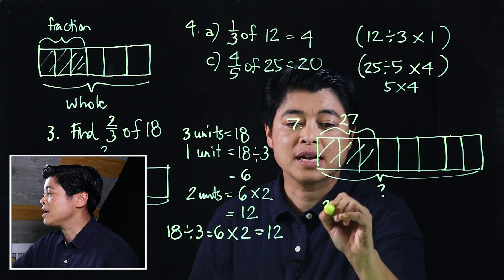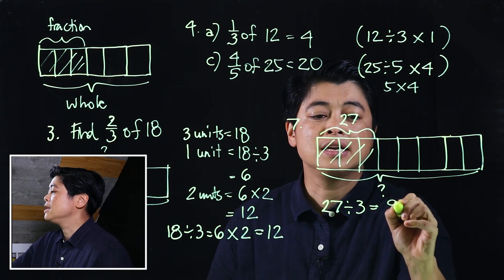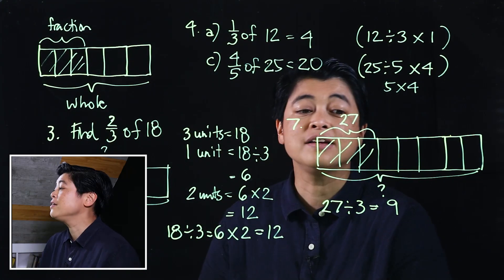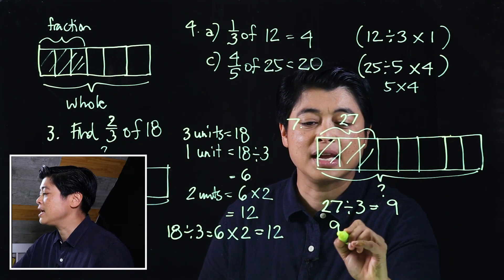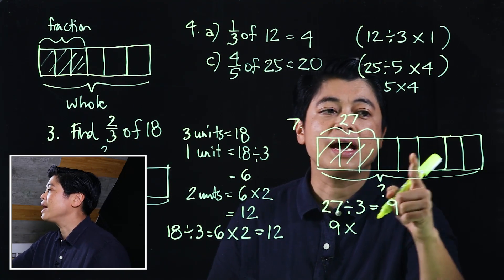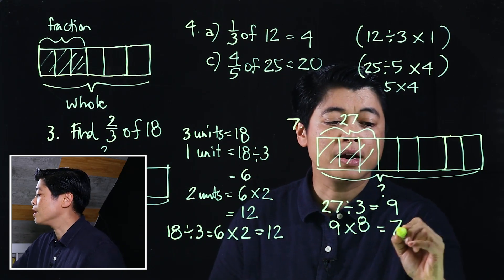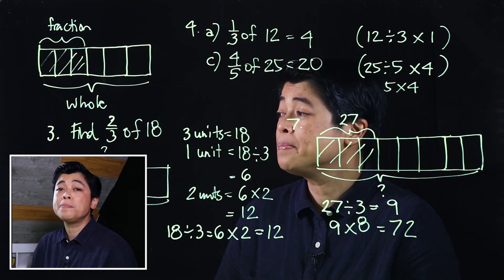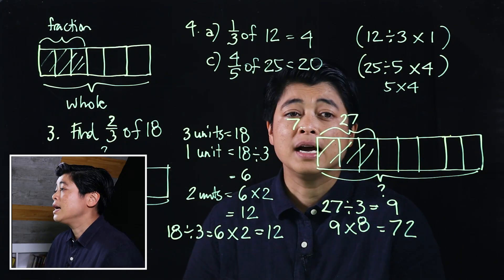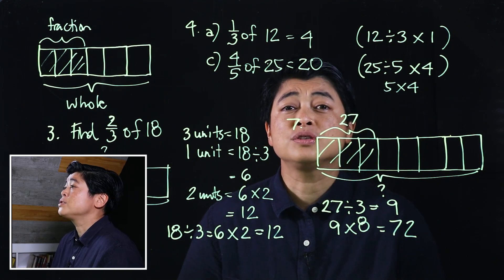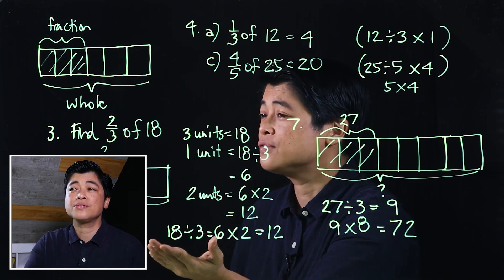Here it's ideal to have the bar model, so I know that 27 is for three groups, which means I'm going to divide: 27 divided by 3 is 9. After I find each box is 9, I'm going to take 9 and multiply it by 8, which means I know that there were 72 pupils that went to the museum.